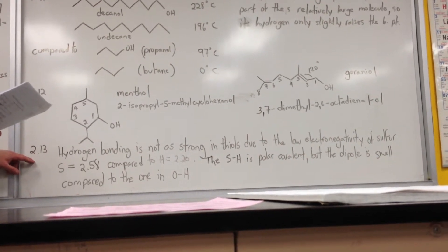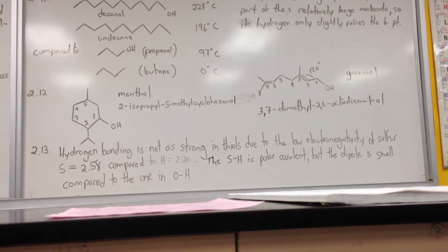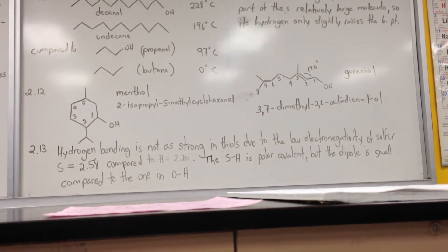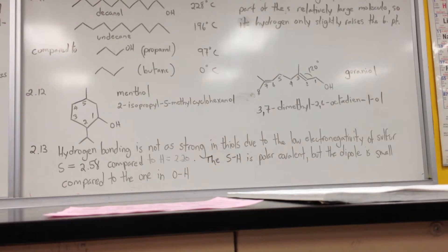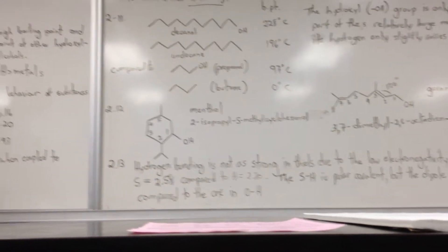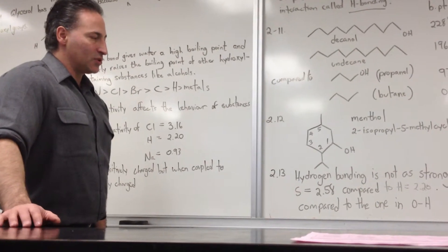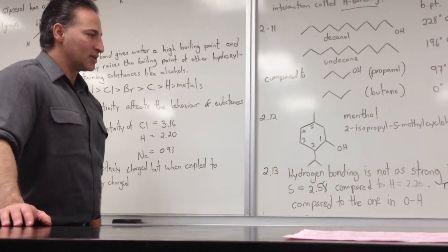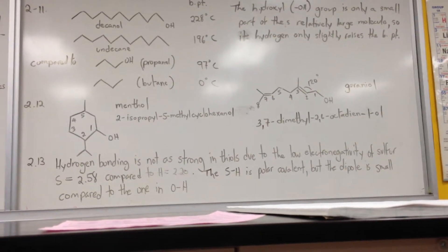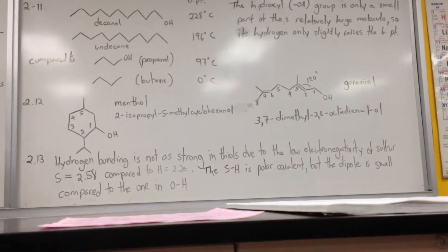What they do show in the text is that the boiling point of methane thiol is only 6 degrees Celsius, whereas the boiling point of methanol is close to 70, and the boiling point of ethane thiol is 35, whereas the boiling point of ethanol is close to 80. So what it shows is that the hydrogen bonding, as a result of sulfur, is of a much lower strength than that which we see when oxygen hydrogen bonds. So hydrogen bonding is not as strong in thiols due to the low electronegativity of sulfur, where sulfur equals 2.58 compared to 2.2 for hydrogen. The sulfur-hydrogen bond is polar covalent, but the dipole is small compared to the one in the oxygen-hydrogen bond.